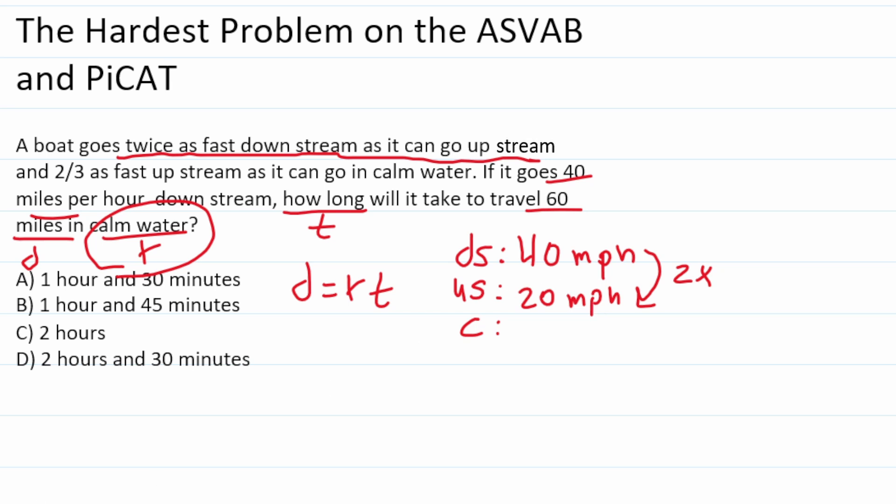So now we figured out how fast it goes downstream and upstream. Let's try to figure out its rate in calm water. We're going to use this information right here: it goes two-thirds as fast upstream as it can go in calm water. In other words, this 20 miles per hour is going to be equal to two-thirds of its rate in calm water.